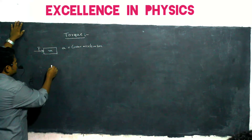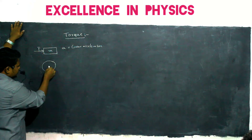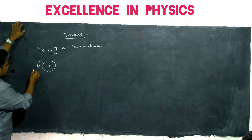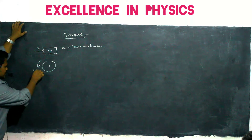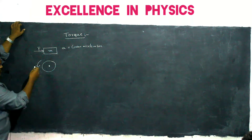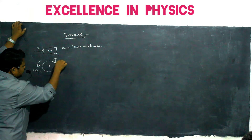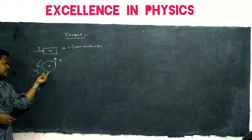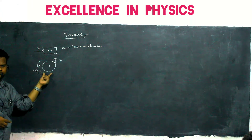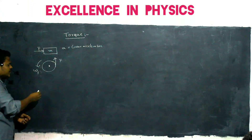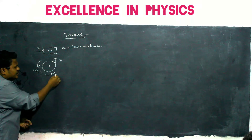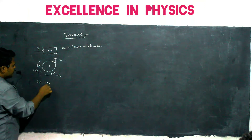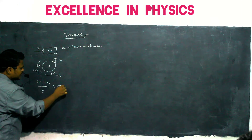Similarly, if this is a disc which is rotating around this axis with a particular angular velocity omega, or let us call it omega 1. To this disc, if I apply force in this direction, what will this force do? The angular speed increases from omega 1 to omega 2. And omega 2 minus omega 1 divided by time is alpha — angular acceleration.